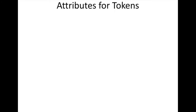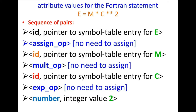So, attributes of tokens — many of the attributes of tokens we know. Here you can see attribute values for a FORTRAN statement. The FORTRAN programming language was used previously; nowadays we don't use it, but I used it some time in my life just for teaching purposes. So here you can see one statement: e equals mc squared — important.